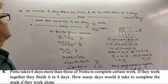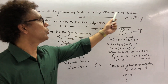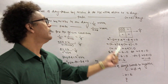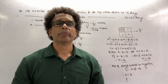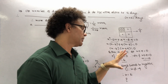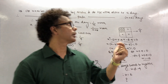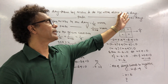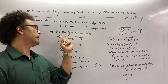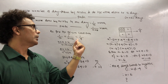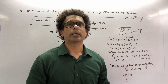Therefore the number of days taken by Nishu to do the work alone is 6 days, and the number of days taken by Pintu to do the work alone is 6 + 6 = 12 days. You must write the final statement. If someone works x days, their one day's work is 1/x. The concept of 1/x for work problems is very important - go through the video again if needed.